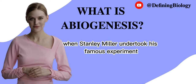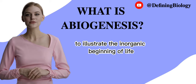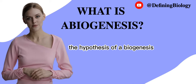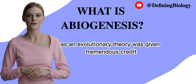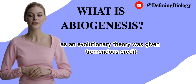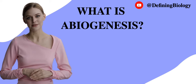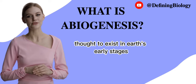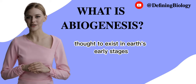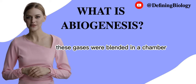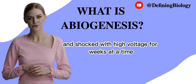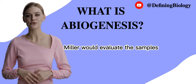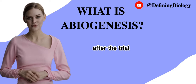When Stanley Miller undertook his famous experiment to illustrate the inorganic beginning of life, the hypothesis of abiogenesis as an evolutionary theory was given tremendous credit. Miller blended several gases thought to exist in Earth's early stages. These gases were blended in a chamber and shocked with high voltage for weeks at a time. Miller would evaluate the samples after the trial.